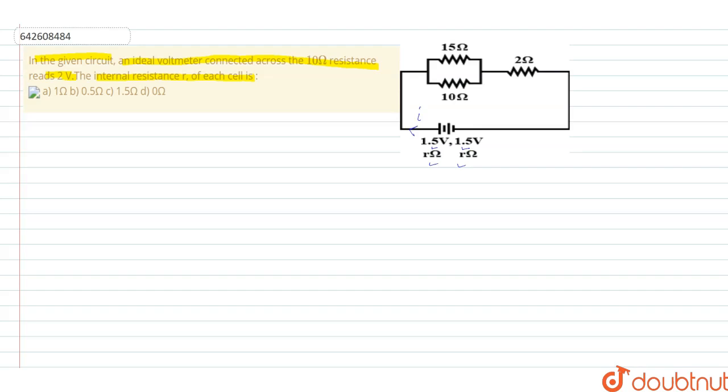And first we need this current value. So for finding the value of current, we need the equivalent resistance of the circuit. So the equivalent circuit's resistance will be 15 into 10 upon 15